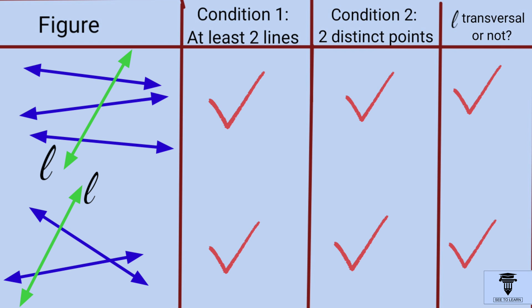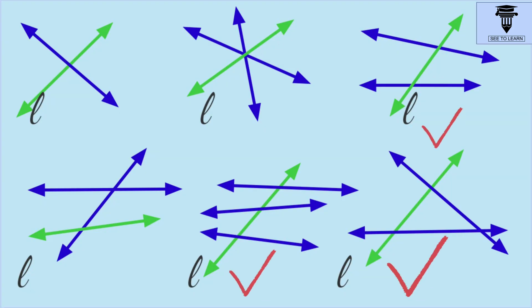Here, it's interesting to know that the other two lines are also transversal because each one is intersecting the other two lines at distinct points. Thus, line L in these figures is a transversal.